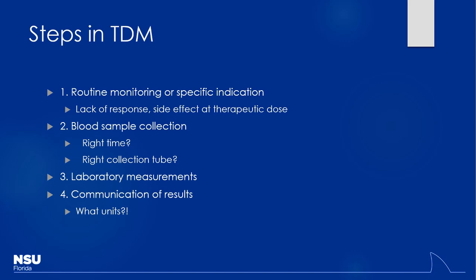The question is: are you just doing routine monitoring, which isn't usually recommended unless there's been some physiologic change in the patient? Or do you have a specific indication — if the patient is having a lack of response at what you'd think is a normal therapeutic dose, or maybe they're having side effects at a good therapeutic dose, you can get a level and figure out what's going on. Blood sample collection timing is very important.